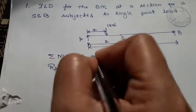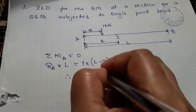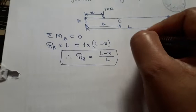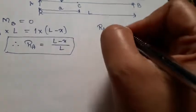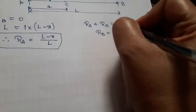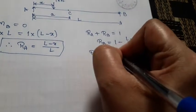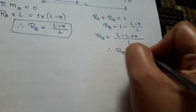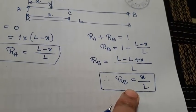Let us take ΣMB = 0. With that condition we get: RA × L = 1 × (L − X), therefore RA = (L − X) / L. We know that RA + RB = 1, so to calculate RB we simplify: RB = 1 − (L − X)/L, which gives RB = X/L. We have now calculated reactions RA and RB.